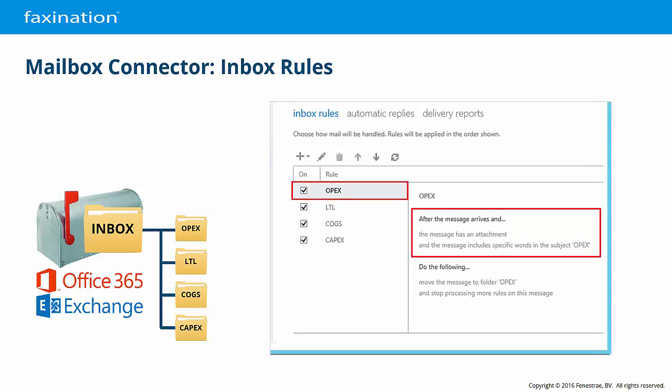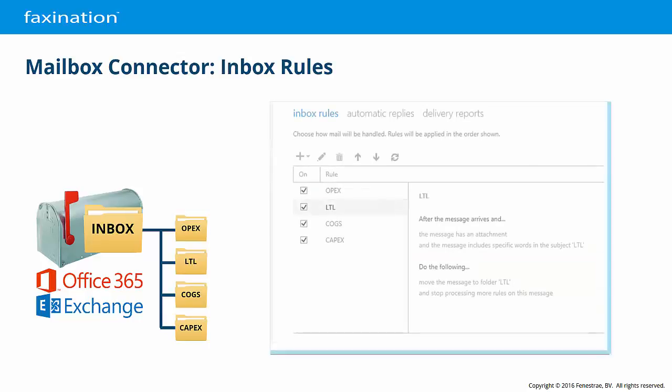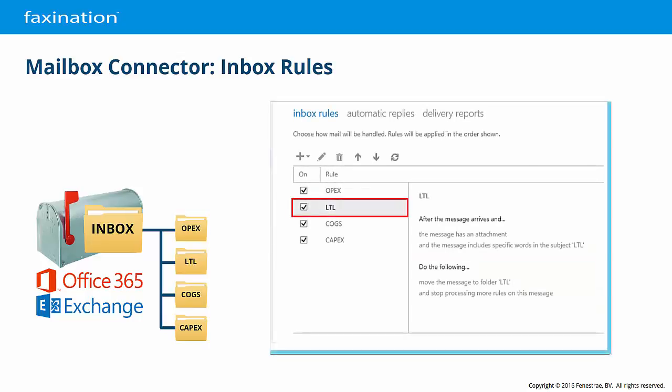In this example, we have created four mailbox connector routes and four email server-based rules to distribute new emails into the four monitored folders. The OpEx rule will trigger when the email message has an attachment and the subject line includes the word OpEx. It will then move the message into the OpEx folder, where it will be processed by Faxonation. Similar rules are created for the remaining three subfolders.